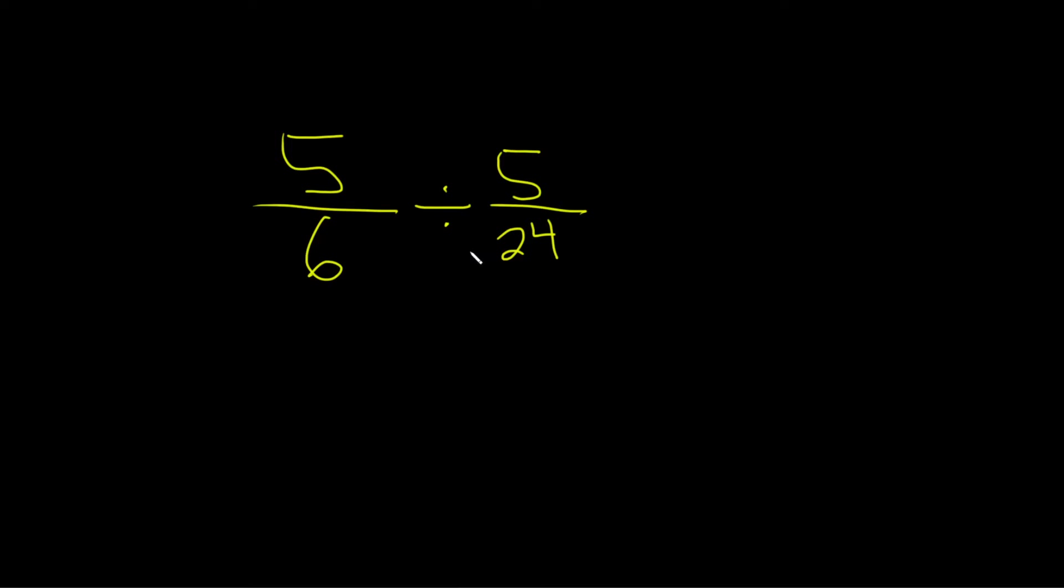5 over 6 divided by 5 over 24. So we have a division problem. Whenever you have a division problem, the first step is to change the division into multiplication by the reciprocal.